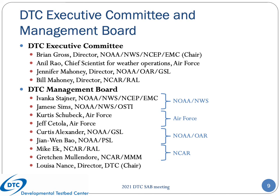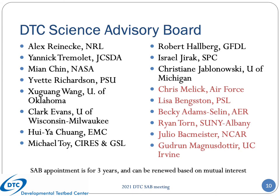This slide shows the current membership of the executive committee and the management board. And this slide shows the current membership of the science advisory board. Note that appointments to the science advisory board are for three years with the possibility of renewal. Terms are staggered such that terms expire for approximately one-third of the members each year. We strive to have a strong representation from the academic community and include at least one member from the private sector. The six new science advisory board members are indicated by red font.